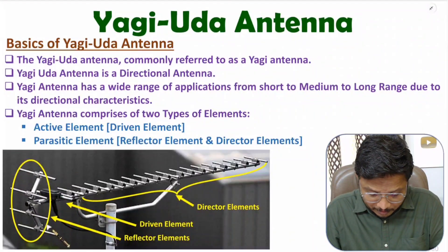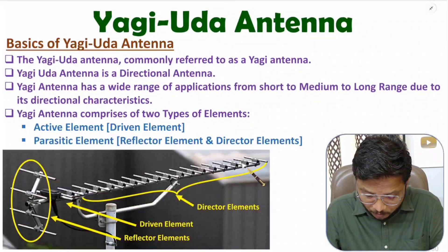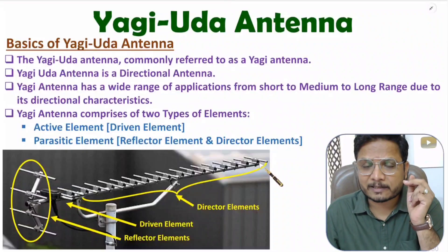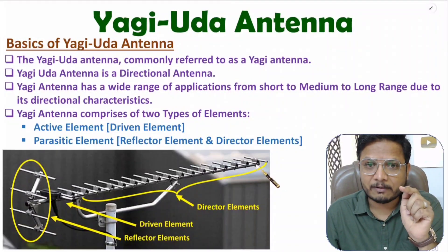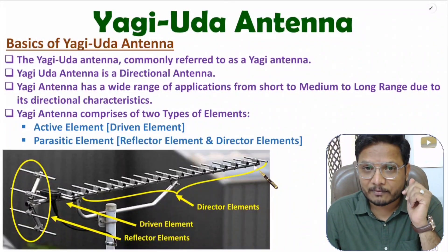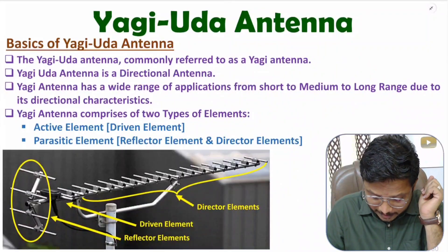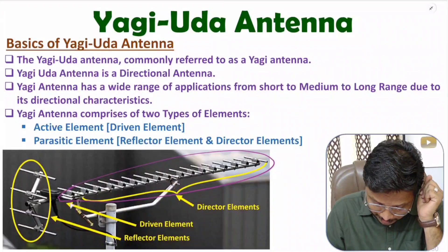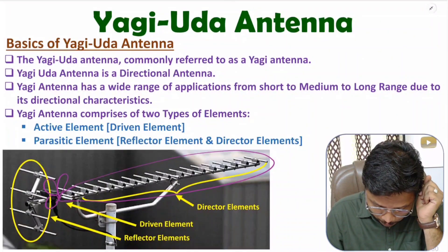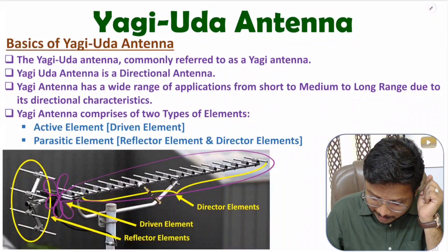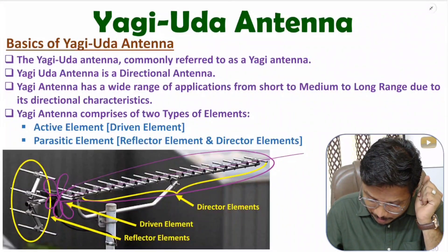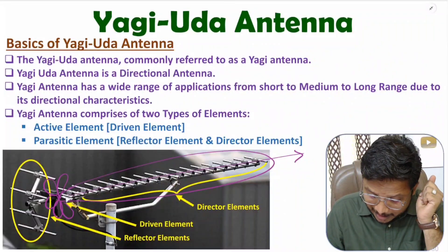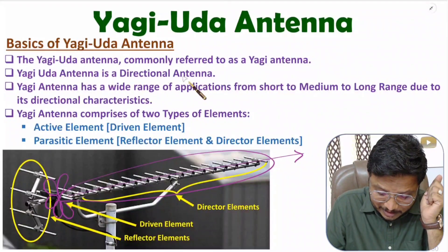With the use of Yagi-Uda antenna, we can have directional radiation characteristics, meaning in a certain direction we will have higher gain. If I show you the radiation pattern, it will appear with a major lobe and minor lobes. So in this direction, you will observe the Yagi-Uda antenna having higher gain — it has directional radiation characteristics.